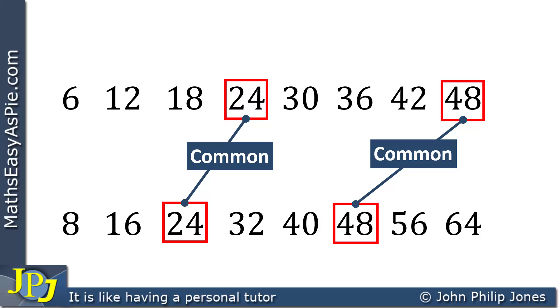Now I needn't have bothered looking for any more, because the lowest common multiple out of 24 and 48 is clearly 24. So this is the lowest common multiple.